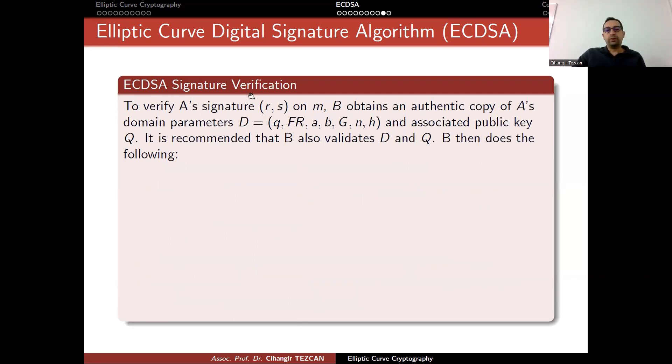Verification. You receive the signature r and s and the message that's signed. Now b wants to check if this is really signed by a. B also obtains the domain parameters. Again, if it is fixed, everybody knows this value.